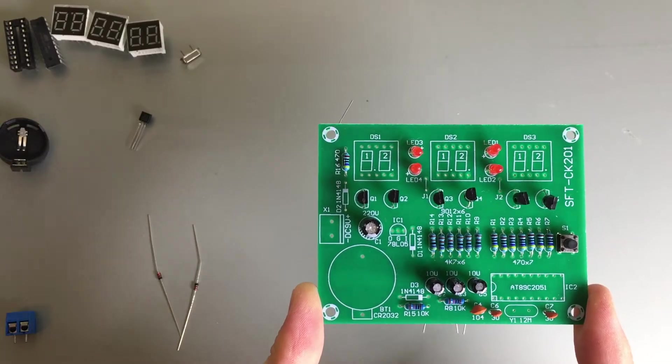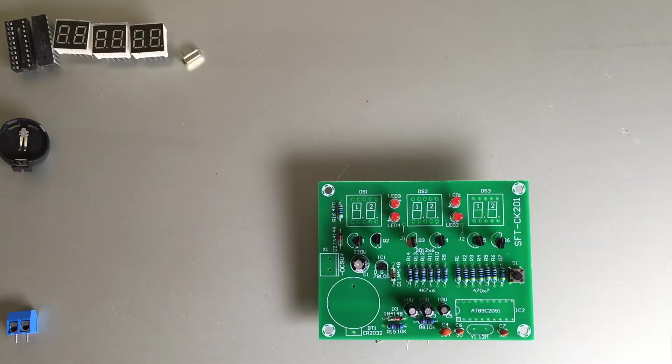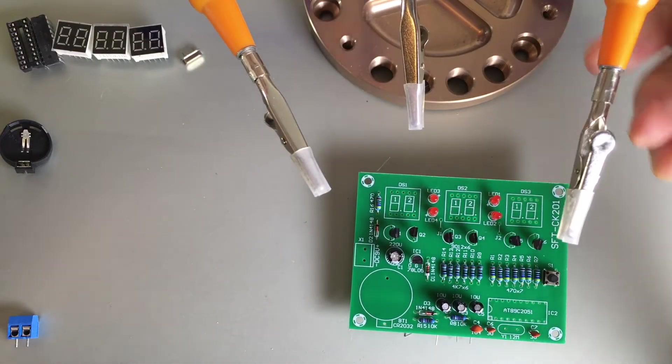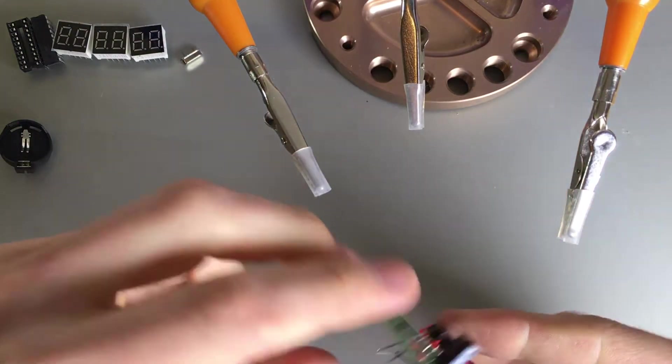Align the flat face of the transistors with the marking on the board. Attention, there are two different types of transistors. Check the numbers. I placed and double checked all components that could be bent to place.